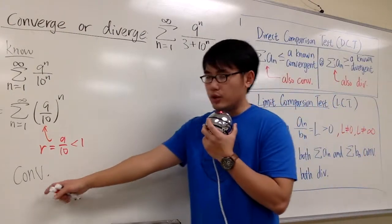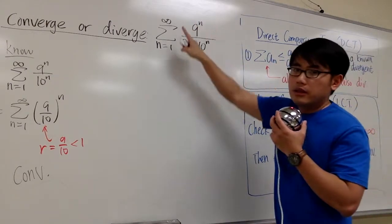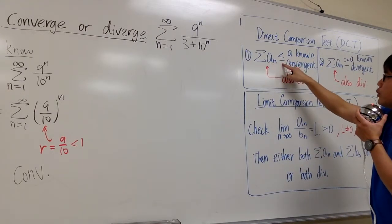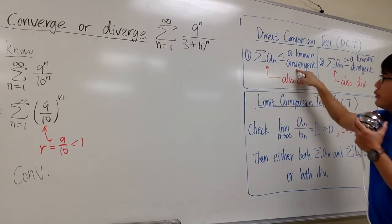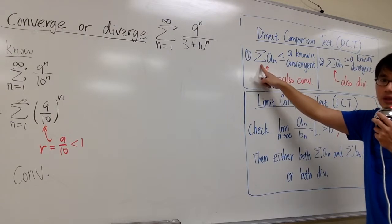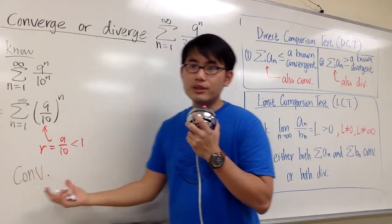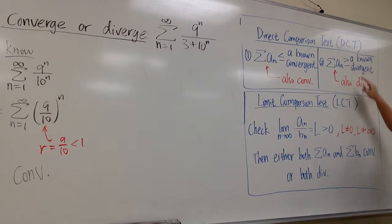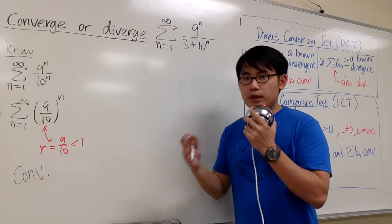If we have something that we know to be convergent, we are talking about the first situation. This is the original series we are trying to decide converges or not — we hope to show that this is less than or equal to a known convergent. If we can do that, if this inequality is true, then we get to say this also converges. If the series we came up with was divergent, that's the second situation: if we can show a series greater than or equal to a known divergent, then this series has to diverge as well. But we're talking about the first situation, so let's go ahead and run through the check.